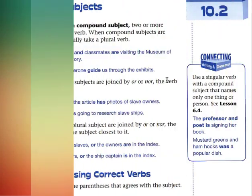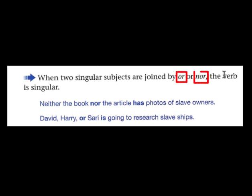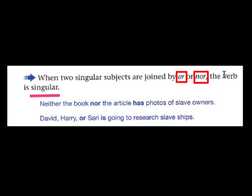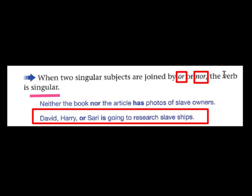When two singular subjects are joined by 'or' or 'nor', the verb is singular. For example: 'Neither the book nor the article has photos of slave owners.' The book is singular, the article is singular, so the verb is singular. Another example: 'David, Harry, or Sari is going to research slave ships.' All three subjects are joined with 'or', so we use a singular verb.